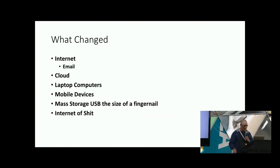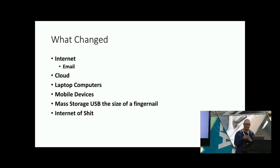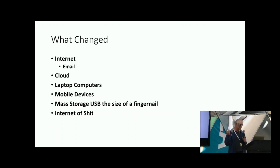So, what changed? Why did we have the advent of breaches? We got the internet, we got email. Let's go ahead and take the formula for Coke and email it to the marketing team. We got cloud instances like S3 buckets. We've got laptop computers that could actually be encrypted, but most people don't have the maturity to even have a proper image on a laptop. We've got people who store things on their phone, then that goes to iCloud, then Dropbox, mass storage the size of your fingernail, and of course the internet of shit.